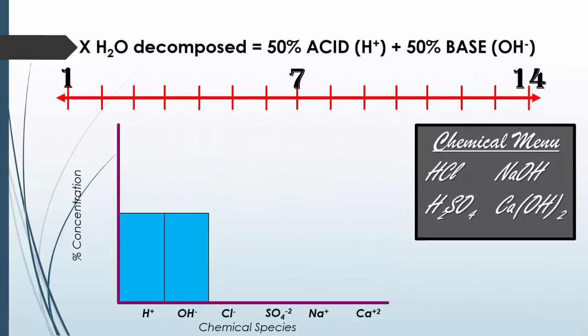So if you were to look at a scale from 1 to 14 — this is the pH scale — 7 is going to be our neutral, 1 is acidic, and 14 is basic. And if we have any amount of water, we always know that if you decompose it, you'll always have 50% acid and you'll also have 50% base. So on a pH scale, that means you would fall dead smack in the middle — that's why water, a neutral compound, falls at 7.